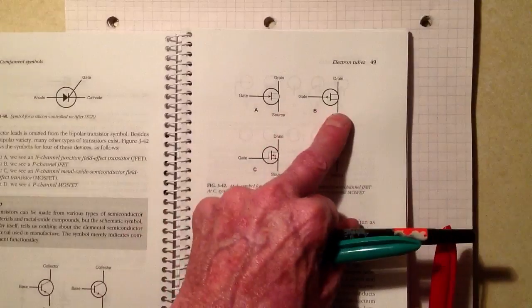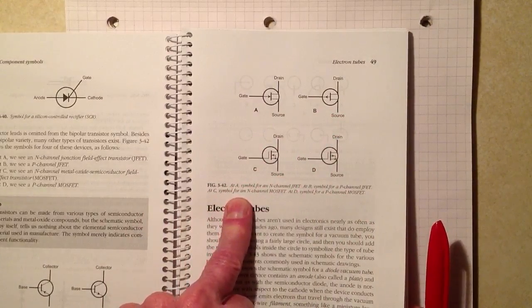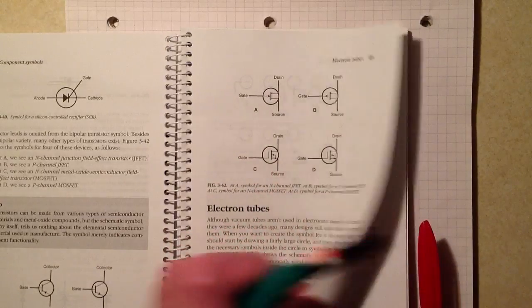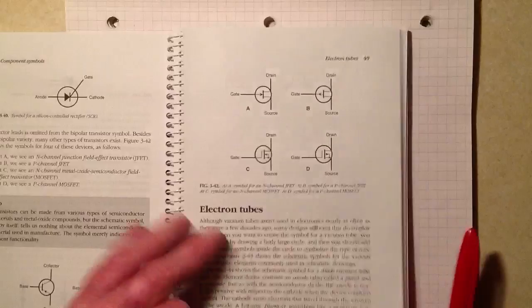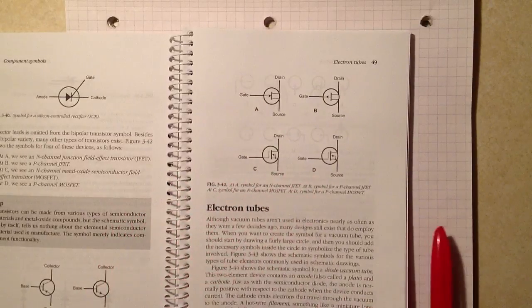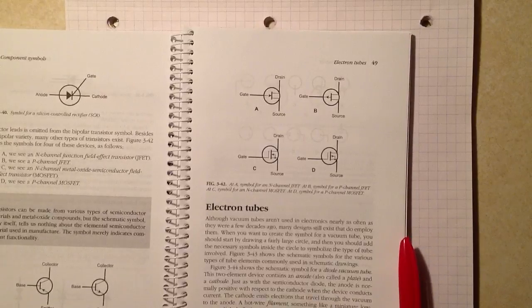Junction field effect transistors in the top of Figure 3-42 on page 49. Then we get into the metal oxide semiconductor field effect transistors in C and D of Figure 3-42, page 49. You can probably see them here.